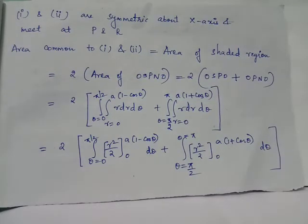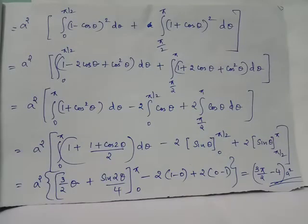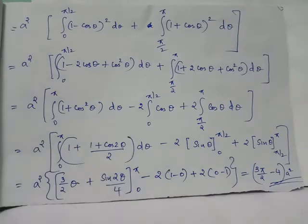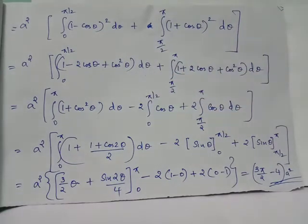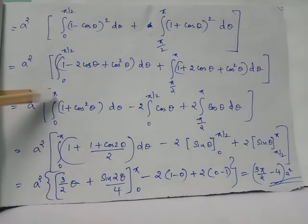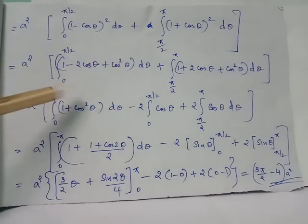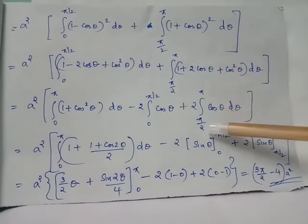After integration, A squared is taken as a common factor. We expand (1 minus cos theta) squared and (1 plus cos theta) squared using the identities for (A minus B) squared and (A plus B) squared. The term 1 plus cos squared theta is common to both integrals, so we combine the limits from 0 to pi by 2 and pi by 2 to pi into a single limit 0 to pi. The term minus 2 cos theta is integrated from 0 to pi by 2, and 2 cos theta is integrated from pi by 2 to pi.